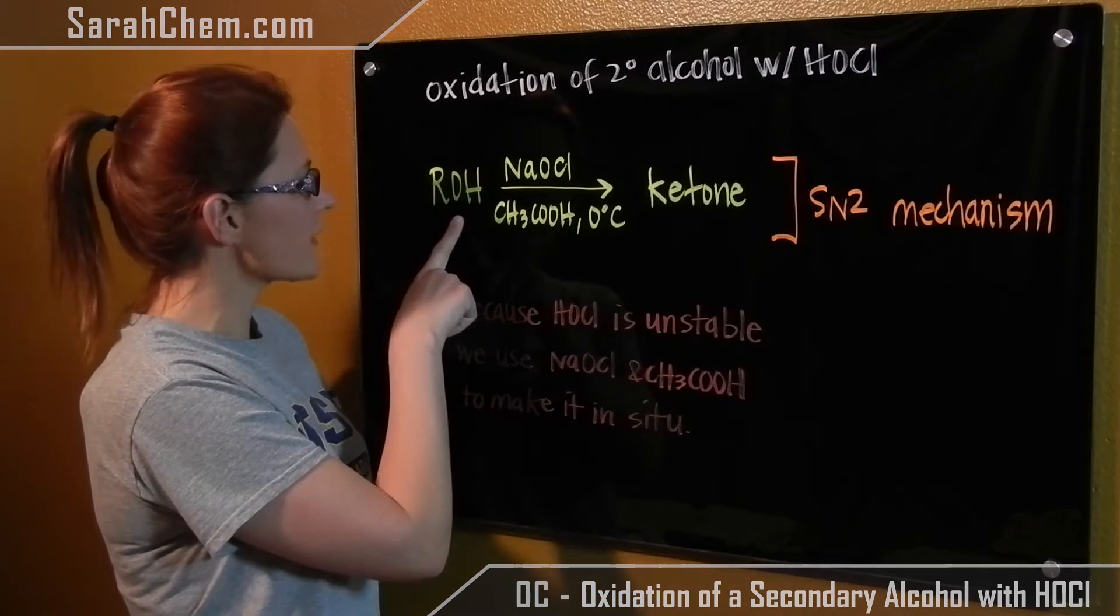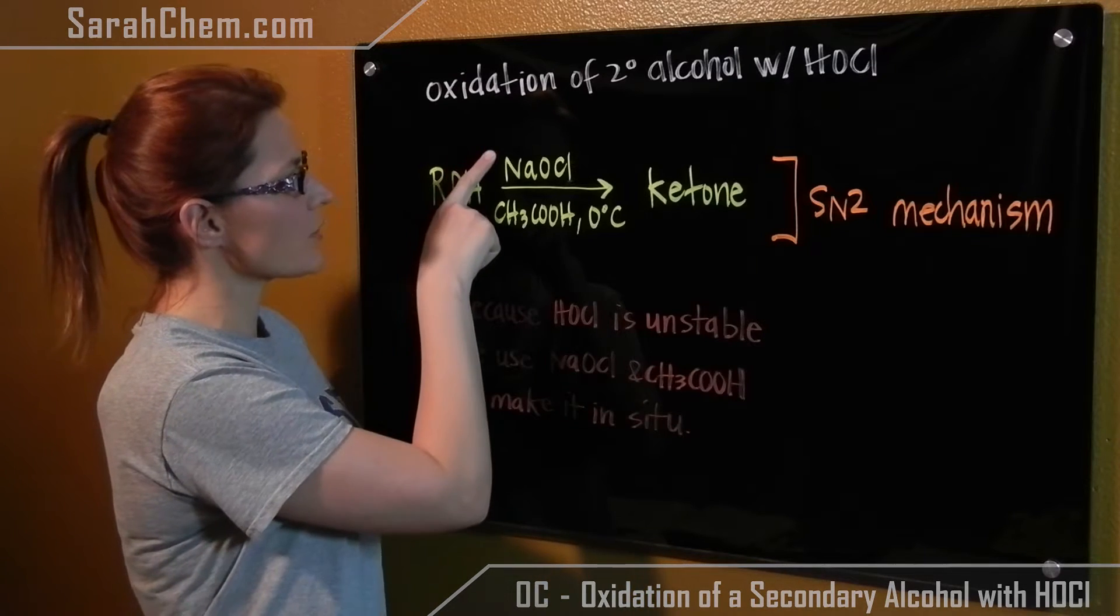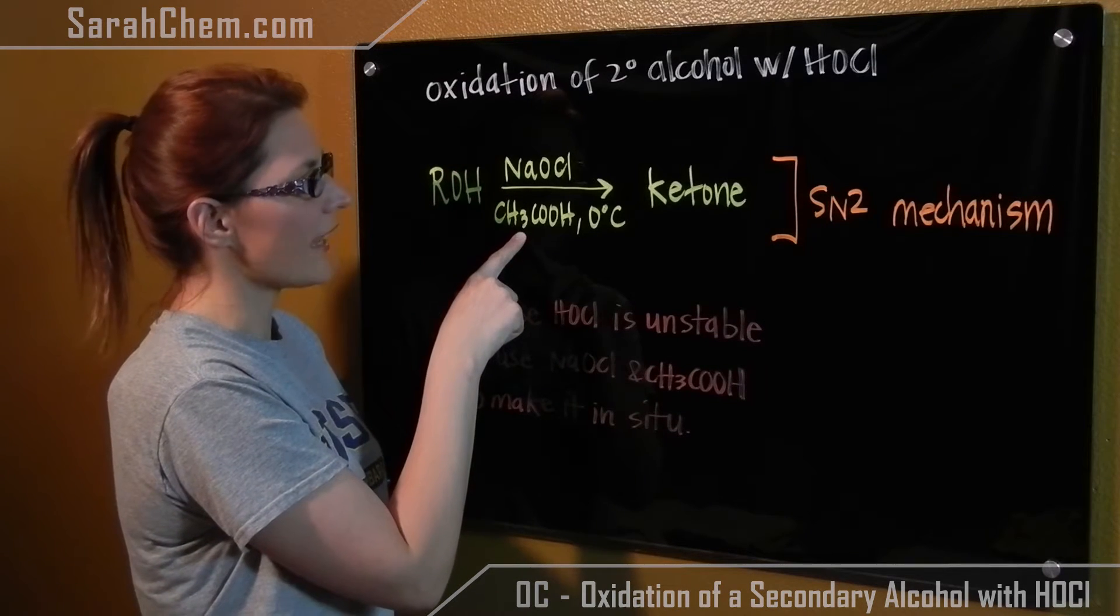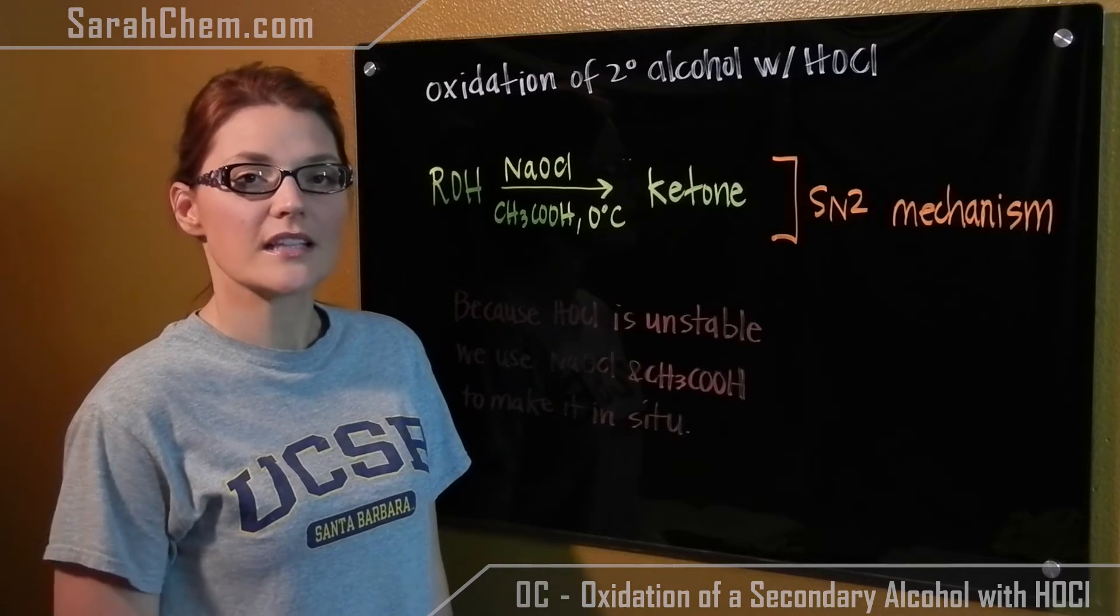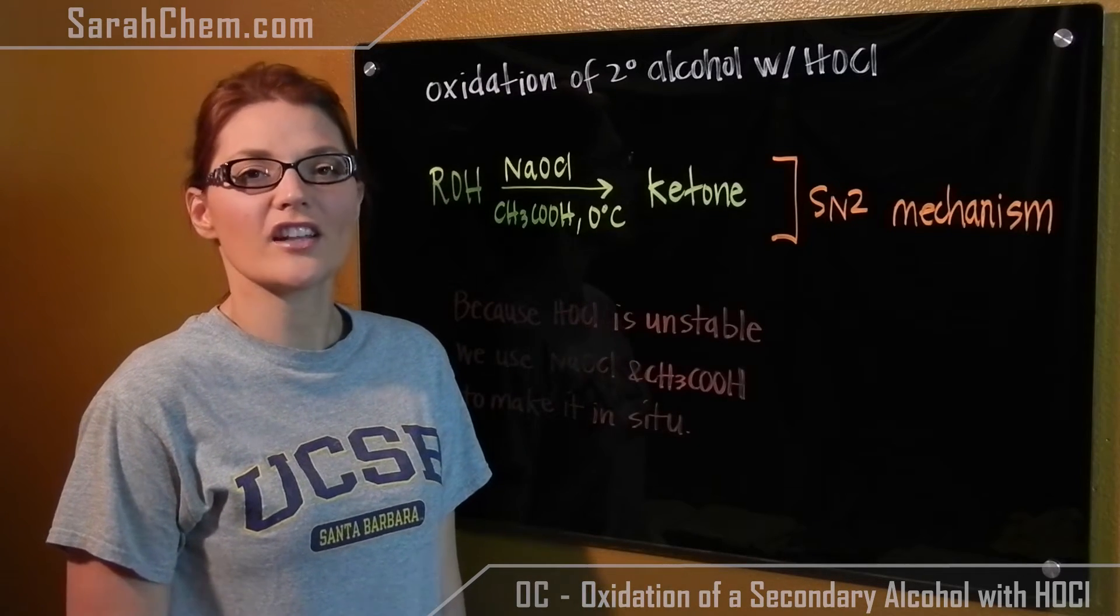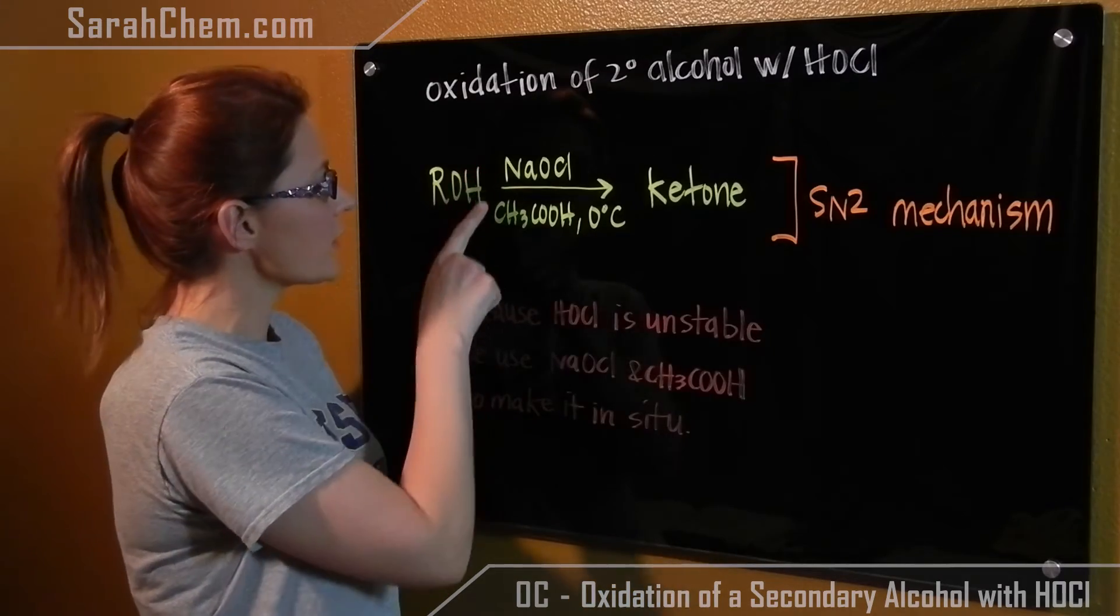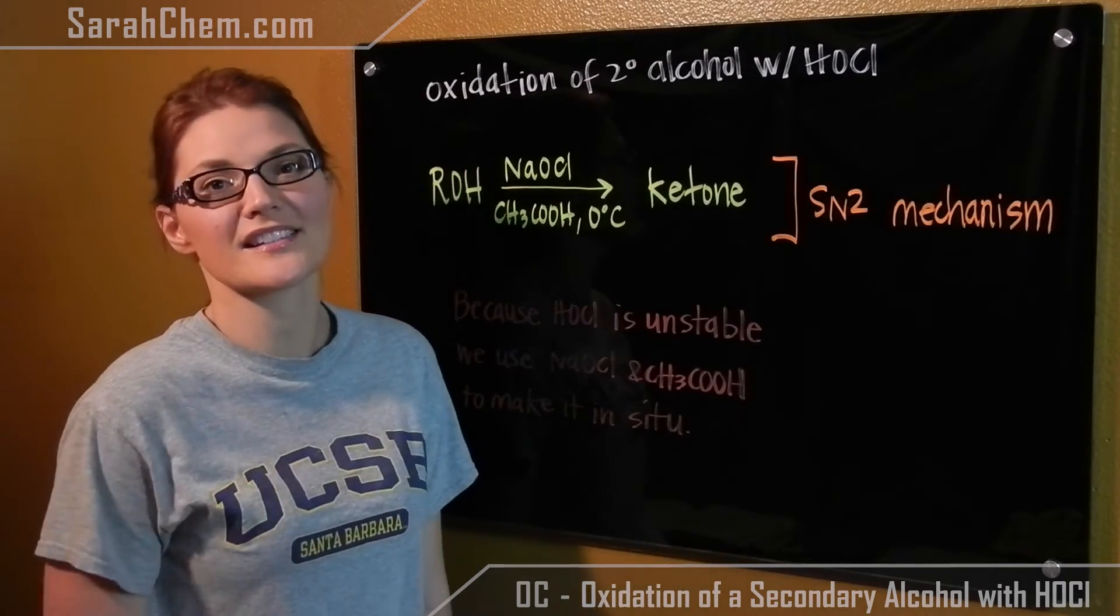As you see over here, we're going to take our secondary alcohol and react it with sodium hypochlorite and acetic acid at a temperature of 0 degrees Celsius. The actual reaction does happen with HOCl. It's just that HOCl is unstable, so we're going to use these two reagents here to make it in situ.